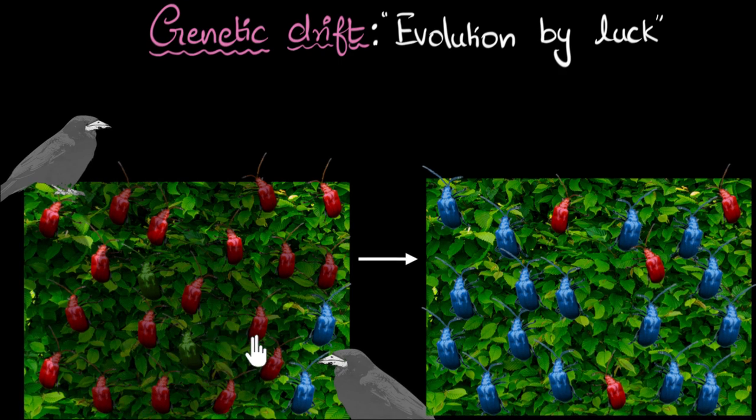Well, earlier, the red beetles were more in number. Which means, the genes responsible for red color, they were more frequently seen, and more frequently being passed along. So, red color genes had a higher frequency, right?